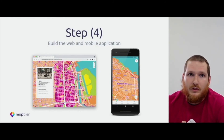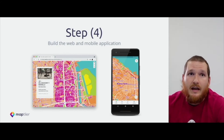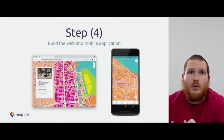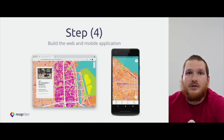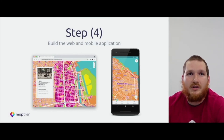Our final goal is to build the web app and mobile application making use of these improvements. We will focus on the web app, showing how you can host the vector tiles you have created, how to use them in the application, and how to display their attributes. We will also show how you can use your custom map on a mobile device using the MapTiler mobile app. You can also reach out to the MapTiler docs site for tutorials on how to build apps with your custom map for iOS or Android.